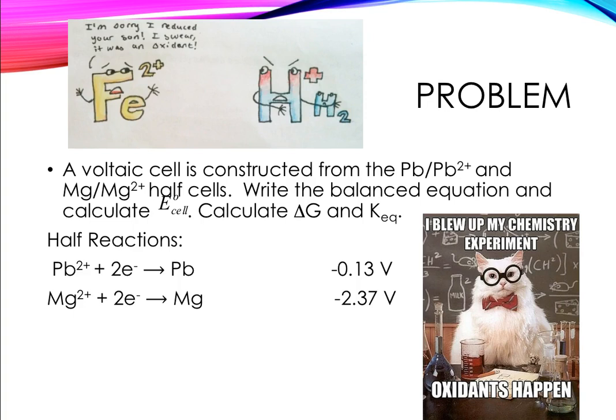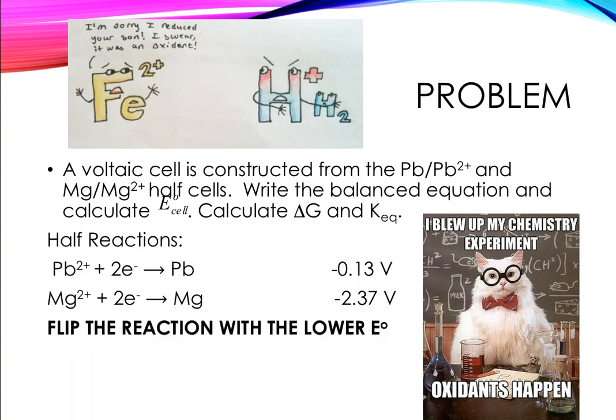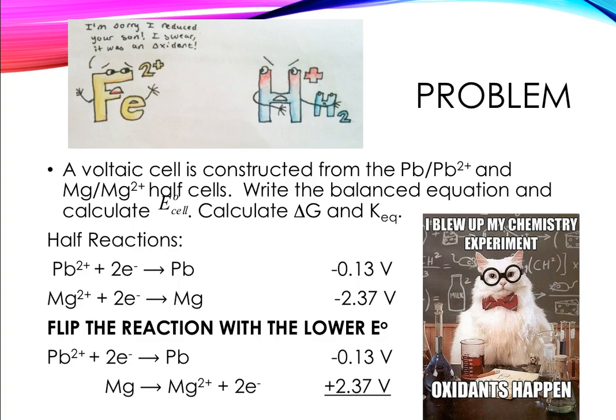Of course, these half reactions have different standard reduction potentials. When you're doing these kinds of problems, you have to remember that we keep the one with the higher standard reduction potential as the reduction half reaction. The one with the lower standard reduction potential is going to flip. You keep the one with the higher E naught and flip the one with the lower E naught because it has a greater potential to oxidize. We'll flip the reactions and add them up — that's how we find E cell. Do remember when finding E cell, you never multiply the E naught values by any coefficients.